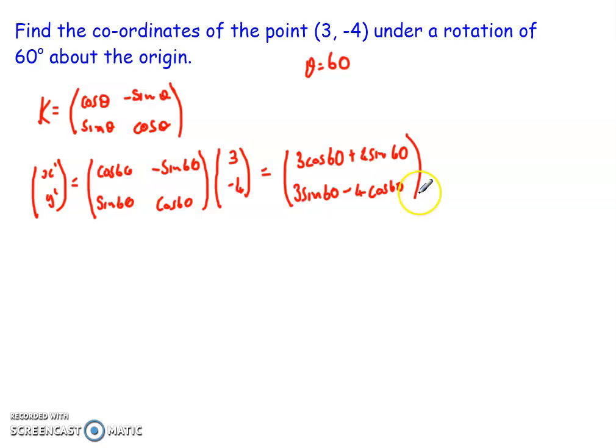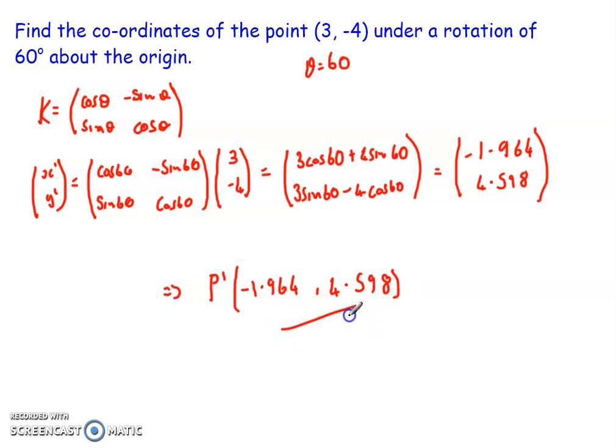So the solution to this, once you've plugged it all together in your calculator, when I round it to three decimal places, I get 1.964 and I get 4.598. So that would mean then my new coordinate P dash, when I've transformed it, would be at the coordinate (1.964, 4.598). So that's me transferred it under that rotation.